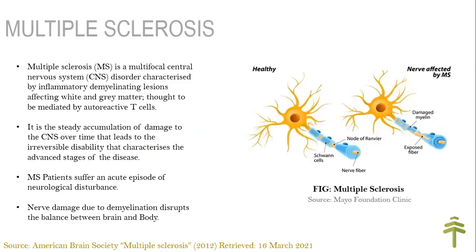To start with our project, let me brief you about what multiple sclerosis actually is. Multiple sclerosis is a disease in which the immune system eats away the protective covering of nerves. It eventually results in nerve damage — that is, demyelination of axons, to be specifically precise — and this disrupts the communication between the brain and the body.